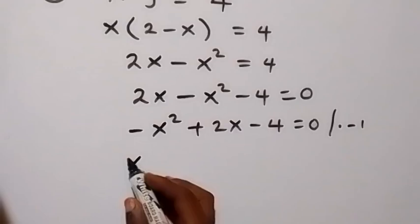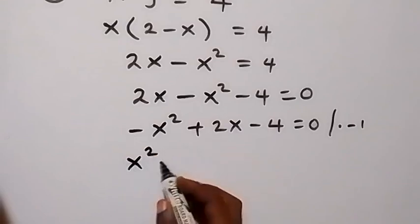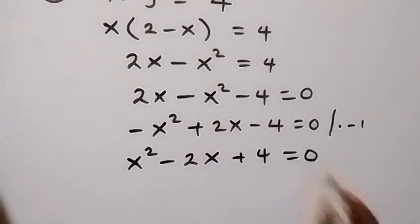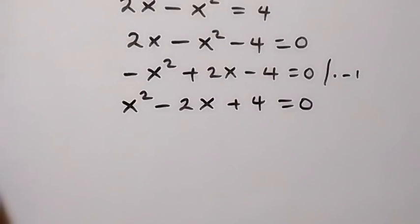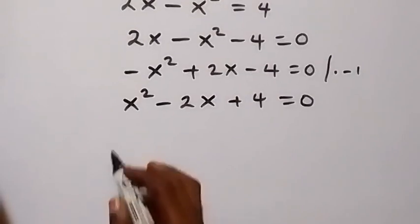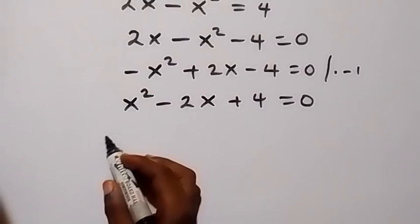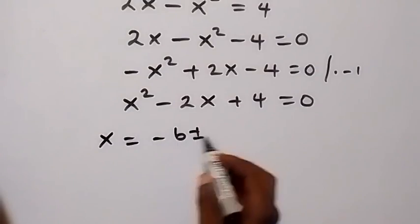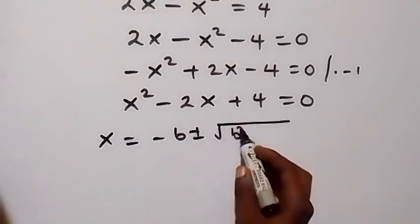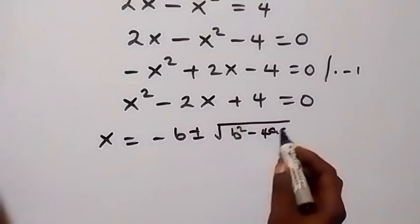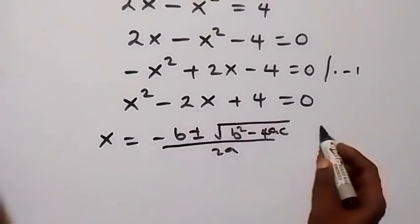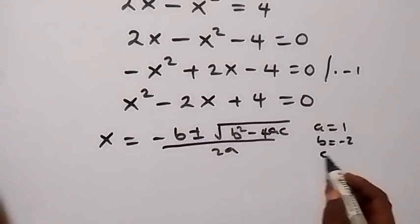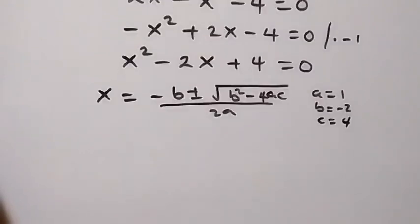Then solving this quadratic equation using the quadratic formula, we have x equals to minus b plus or minus square root of b squared minus 4ac over 2a. Here a is equal to 1, b is minus 2, and c is 4.